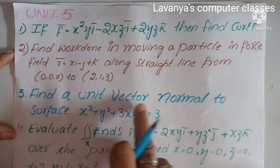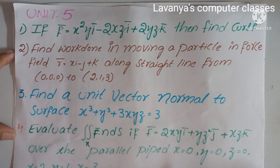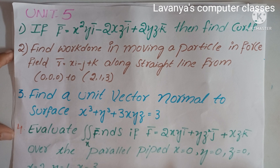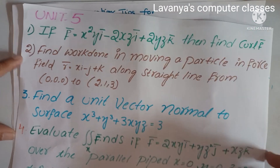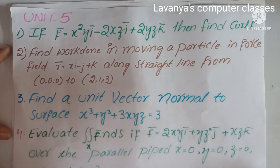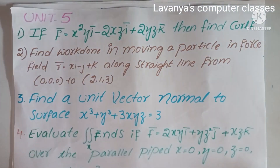These are the unit five important questions. The third question is: find a unit vector normal to a surface. Take screenshots of the unit five questions and prepare. These are the important questions in M2 unit five.